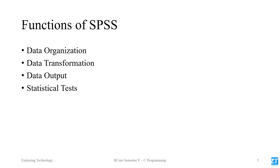For data transformation, we can apply statistical tools to the data. For example, we can find the square root, change the logarithm, change the scale, and change the data in various ways.